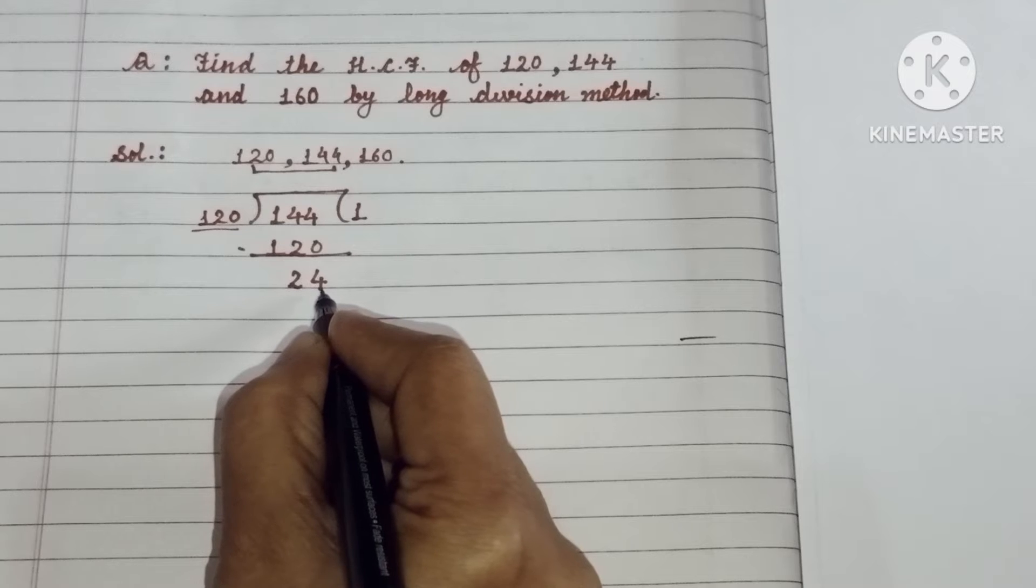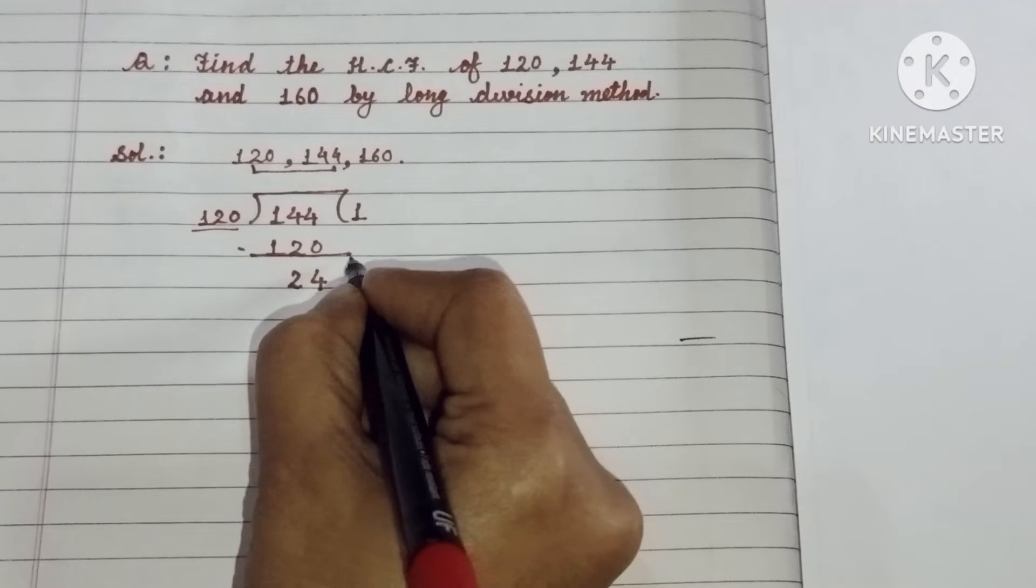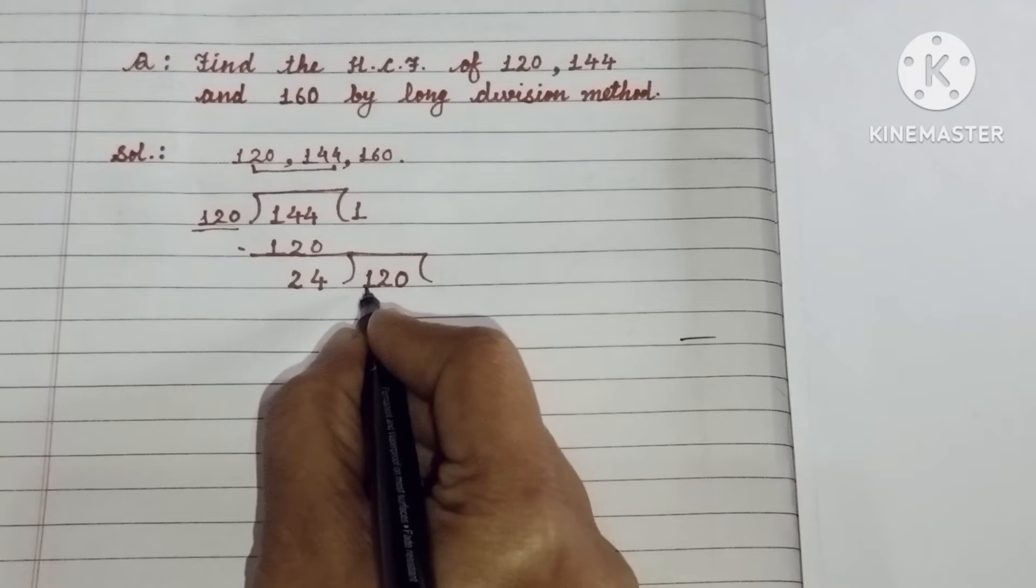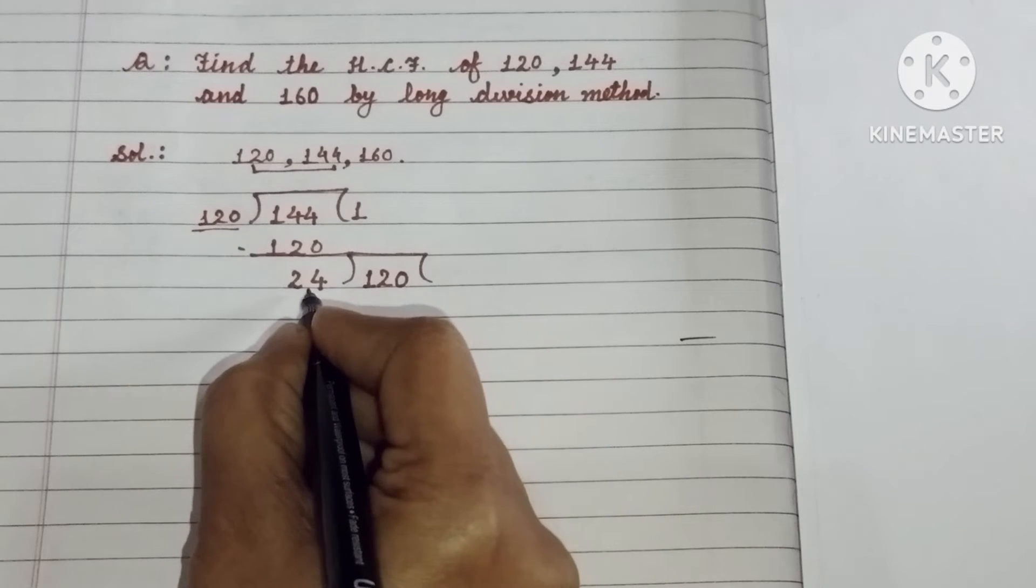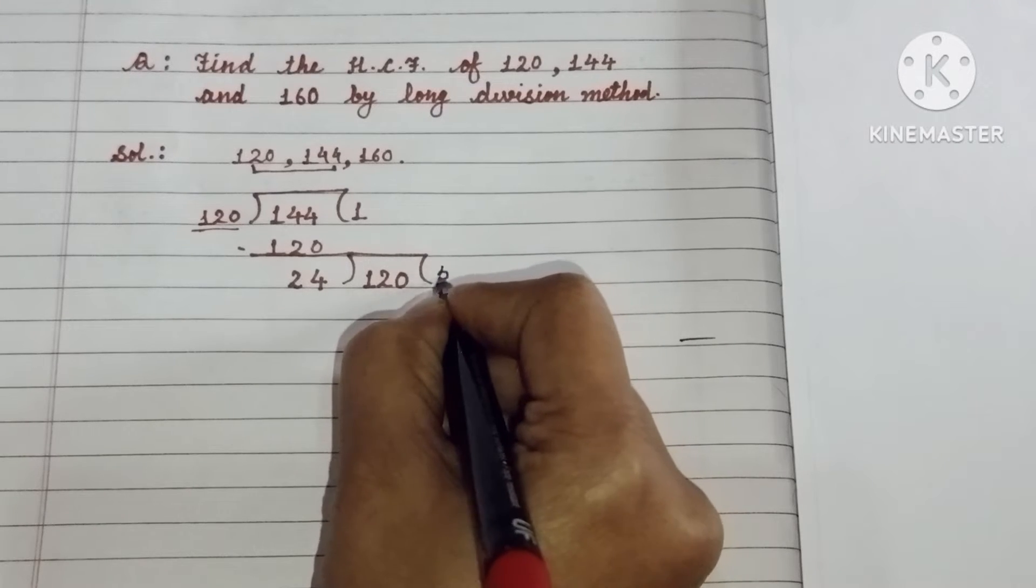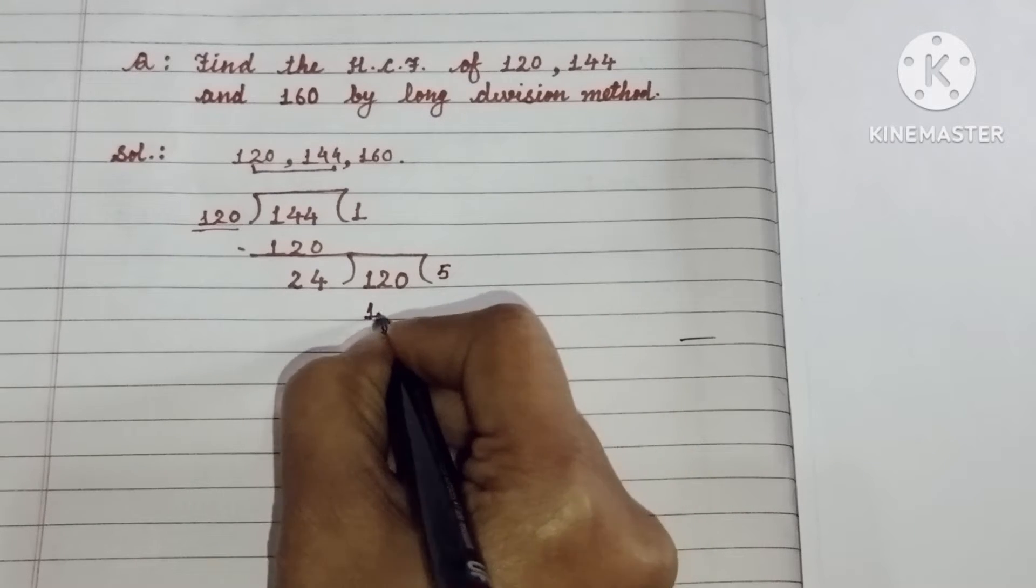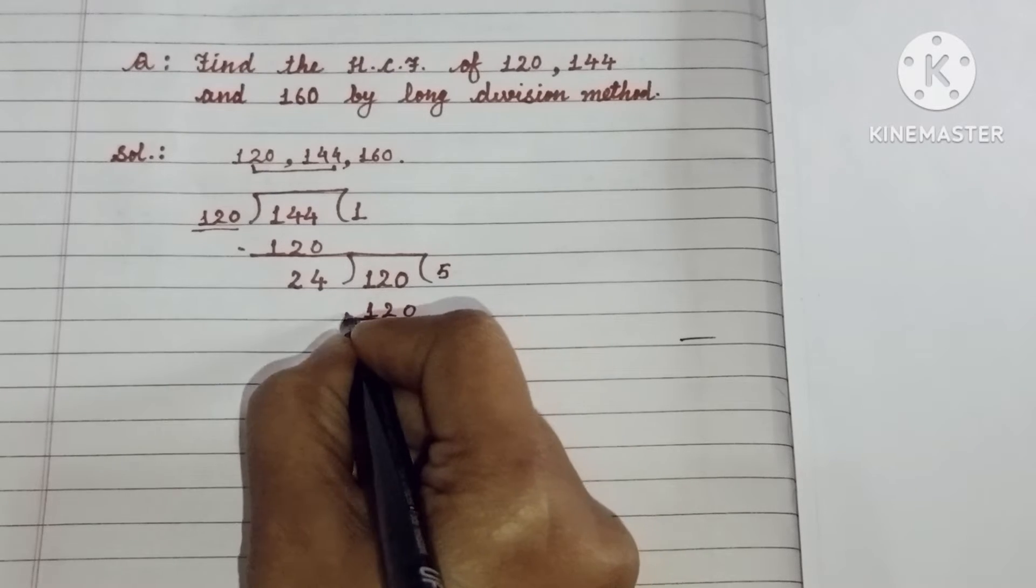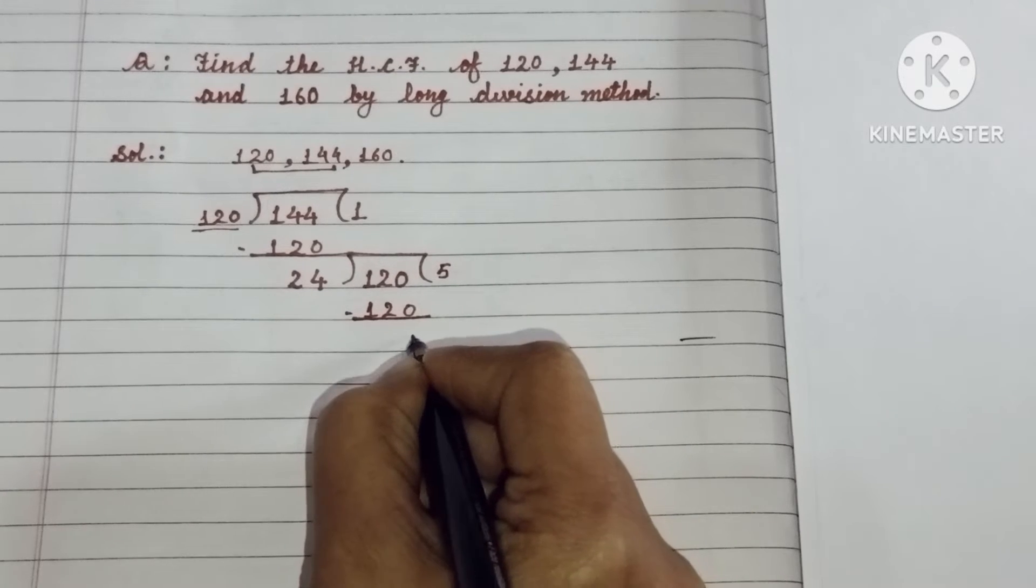Now take the remainder as the new divisor and this divisor as the dividend. Aap kya karenge bita? 120 ko 24 se divide karenge. So 24, 5 is the 120. Clear bita? Now subtract 120 from the 120. So it will be 0.